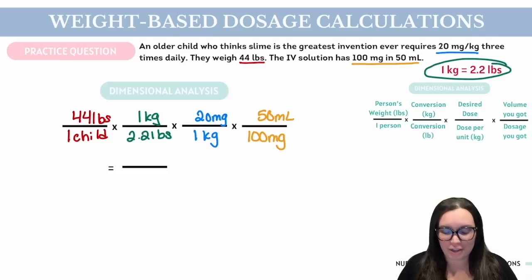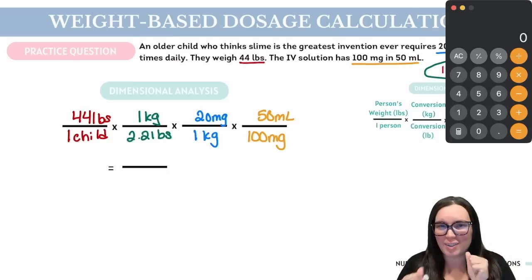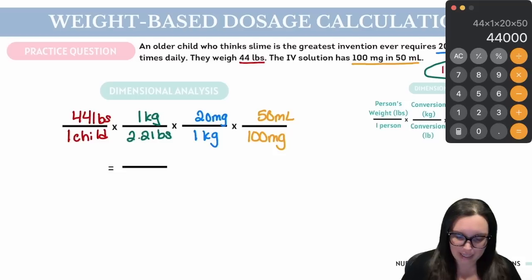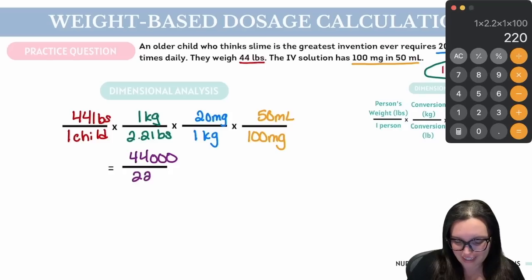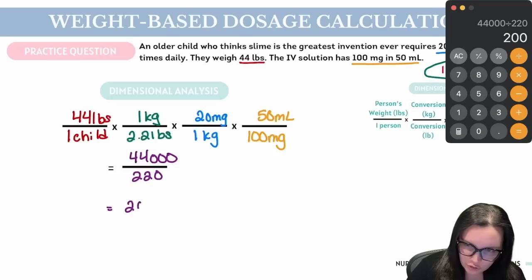Let's make sure we're only left with mLs for this child. Pounds cancels out pounds, kilograms to kilograms, milligrams to milligrams, leaving mLs per child. Now let's do our math — multiplying everything on the top: 44 × 1 × 20 × 50 = 44,000. For the bottom: 1 × 2.2 × 1 × 100 = 220. Dividing 44,000 by 220 gives us the correct answer of 200 mLs IV three times a day.